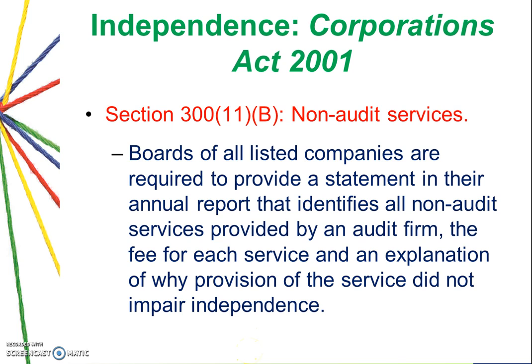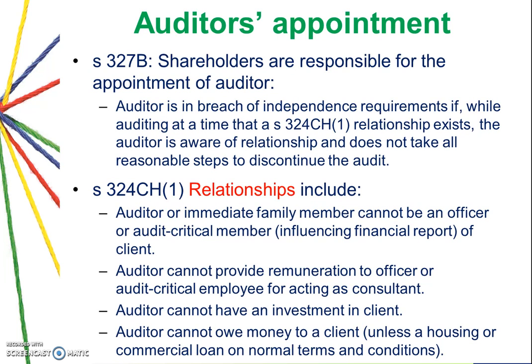Every seven years you need to change the audit firm. Section 300 paragraph 11B lists the non-audit services that the accounting firm can perform for the client, and they must disclose these non-audit services. Regarding auditor appointment — in theory shareholders are responsible for appointing the auditor, but in practice the board of directors nominates the auditor and shareholders simply vote yes or no. The auditor cannot be a shareholder, cannot have financial investment in the client, and cannot owe money to the client.